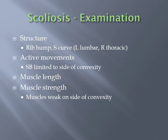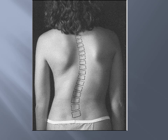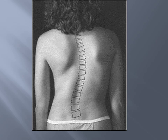Active movements would be evaluated as well. Typically, side bending would be limited to the side of the convexity. Muscle length and muscle strength would be examined throughout the area. It's common to have weak muscles on the side of the convexity. There are differences in fiber types on the side of the convexity and the concavity, which are a little bit difficult to predict based on research. The S-curve and the rib hump on forward bending are key features to identify and name during examination.